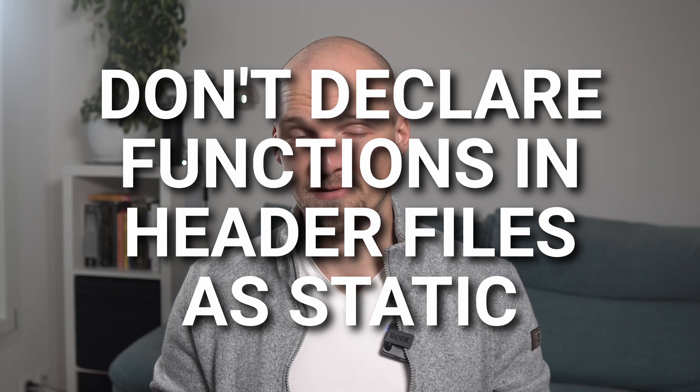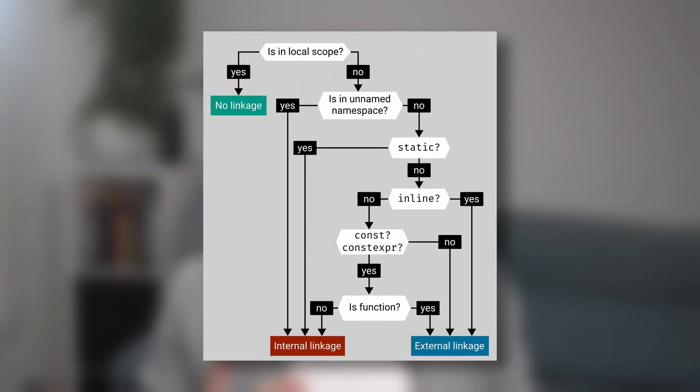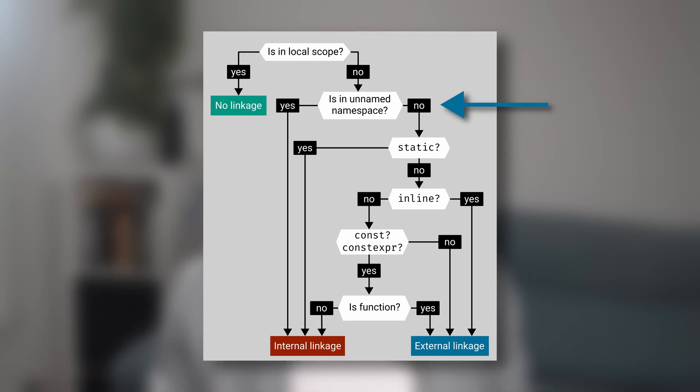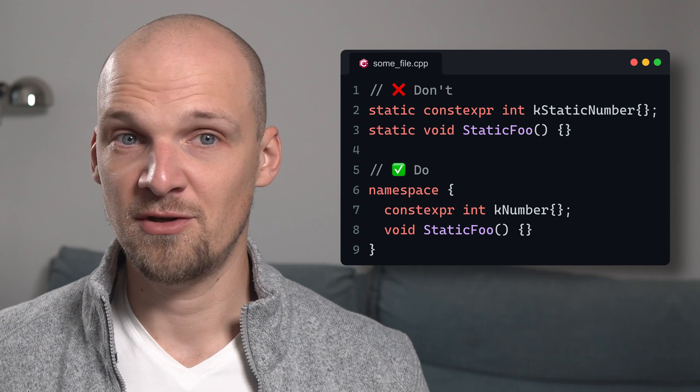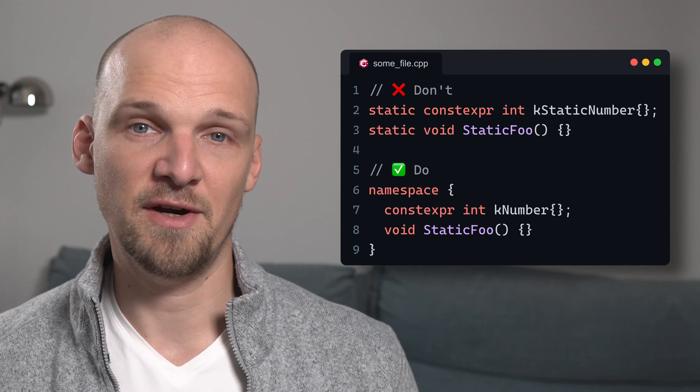When we do define functions and data in a source file, we can still find some advice on the internet to use static in such definitions. I would argue that this advice is obsolete. Going back to our chart, while static has a superpower to make anything have internal linkage, the unnamed namespaces have the same superpower — and it turns out they are usually even more powerful in this regard. So if we define some data or functions in a CPP file, we should put them into an unnamed namespace instead of defining them as static.